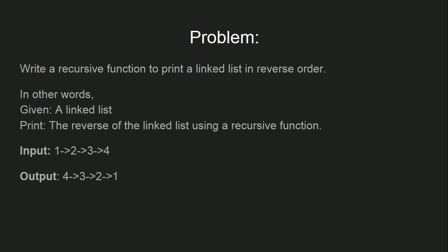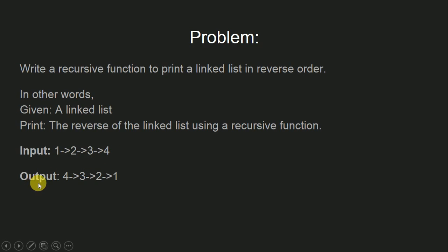For example, if the input linked list is in the order 1, 2, 3, 4, then the output will be in the order 4, 3, 2, 1.